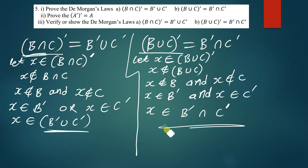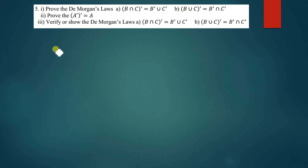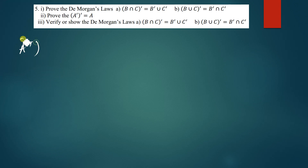This is how you prove that (B ∪ C)' = B' ∩ C'. Now let's move on to the next part, which says: prove that (A')' = A.